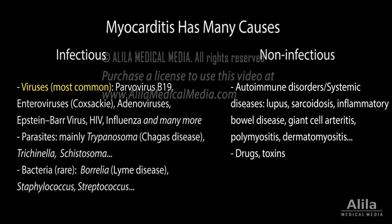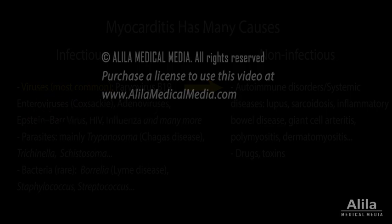An infectious myocarditis may also progress to autoimmune myocarditis at a later stage, after the infectious agent is cleared. A triphasic model has been proposed to describe the disease.